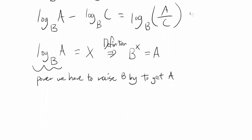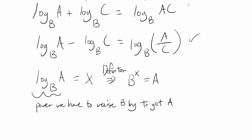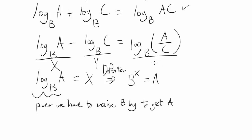So now let's try the second one. As you can see, by rewriting logarithm in terms of exponentiation and using properties of exponentiation, you can prove many, if not all, of the logarithmic properties. So let's apply the same thing. Let's let log base B of A be X, log base B of C be Y, and log base B of A over C be Z.